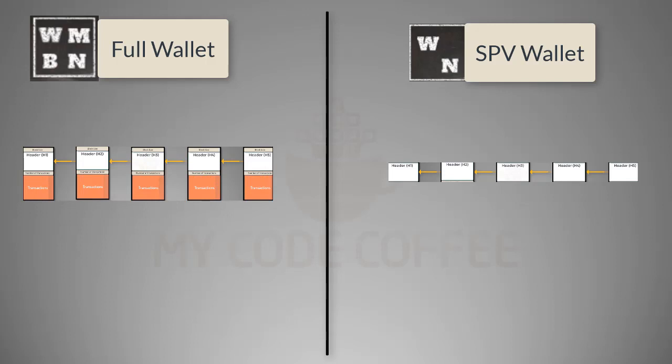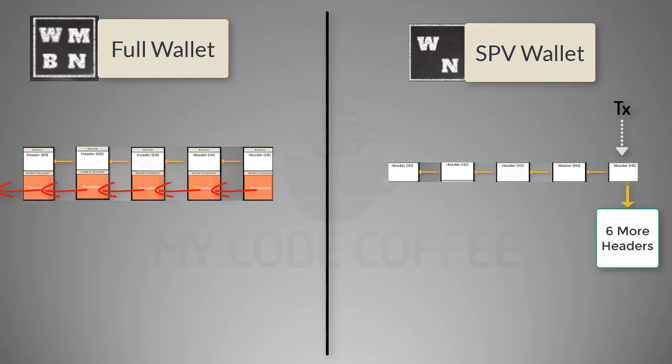Whereas a full node is able to verify a transaction by tracking back previous transactions all the way down to the first block or genesis block, an SPV node attaches the transaction to the block with the help of the Merkle path and then waits for 6 more block headers. Once it gets at least 6 more block headers on top of the header belonging to the transaction, it assumes that the transaction is valid and confirmed.